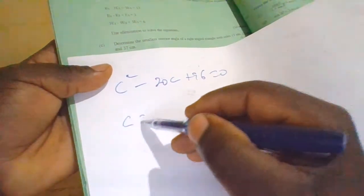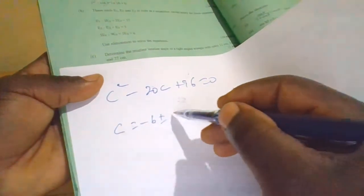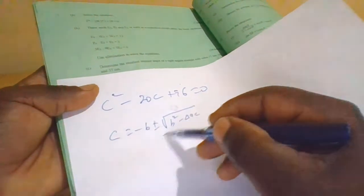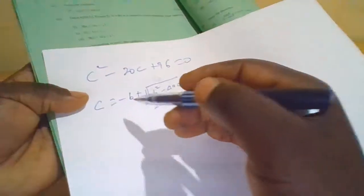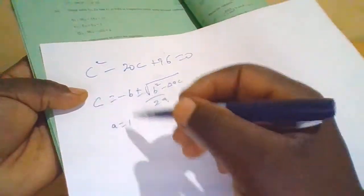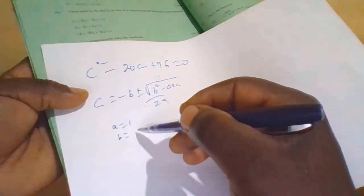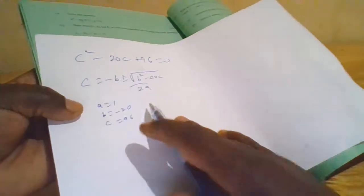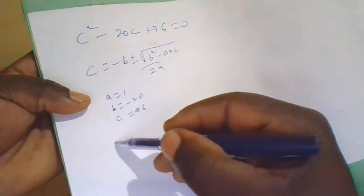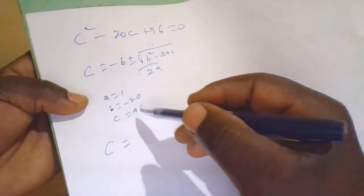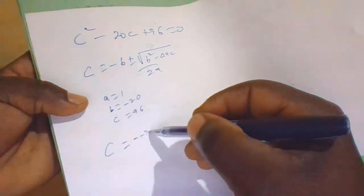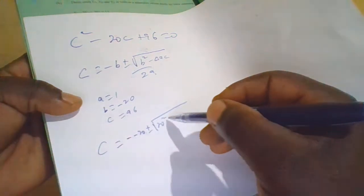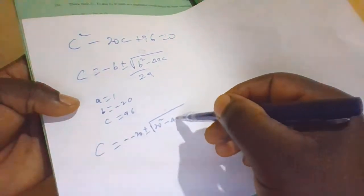Using the quadratic formula, C equals minus b plus or minus the square root of b squared minus 4ac, all over 2a. Here a equals 1, b equals negative 20, and c equals 96.